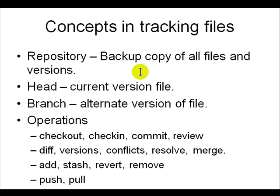Every time you make a change in a file you need to check in your changes. The repository — CVS — will keep all the changes you made, the date, and why you made the changes. Anybody who has access to the repository can have a copy of your files and your changes, and that's called a head — the current version of the file.